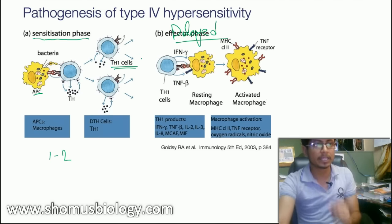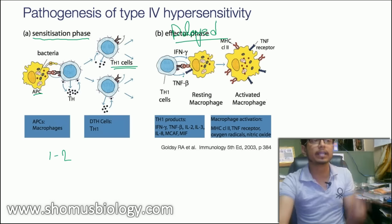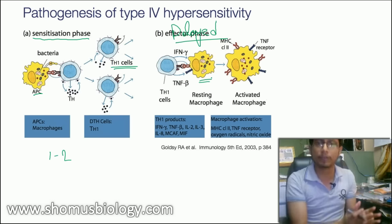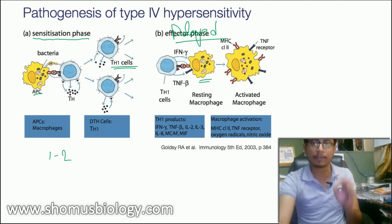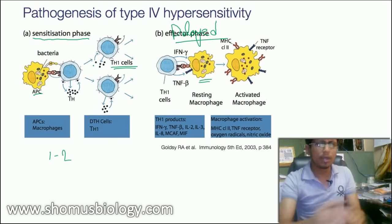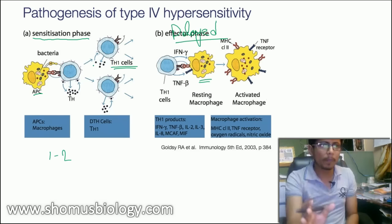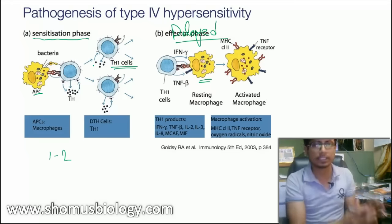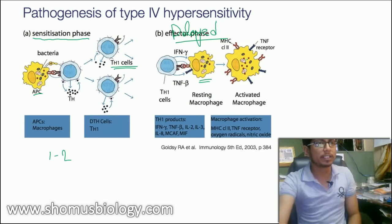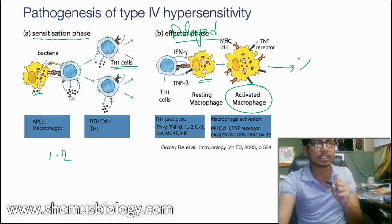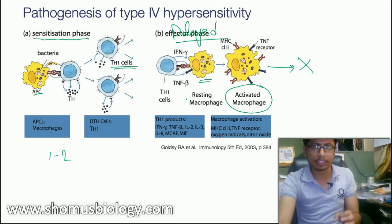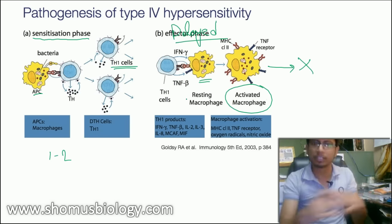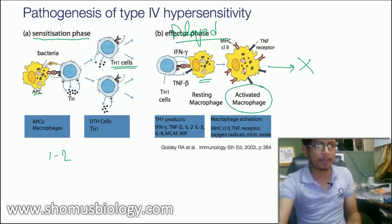That is the sensitization reaction. The second part is the effector phase. Once T helper cells are activated, a large pool of T helper cells can go and activate many macrophages. Because a huge pool of T helper cells is activated from the earlier antigen encounter, they further activate a massive number of macrophages. Those macrophages become very hyperactive — they start degrading cells, engulfing cells, and breaking them down.